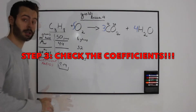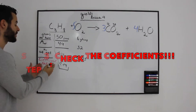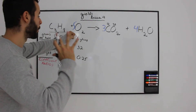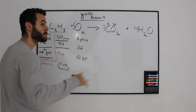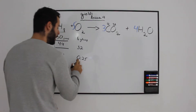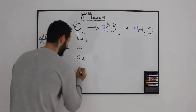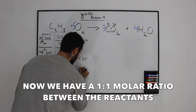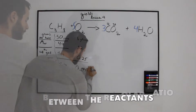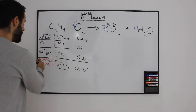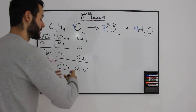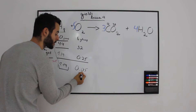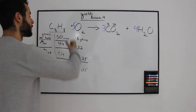But wait — you have to actually compare the coefficient ratios, because 1 mole of propane is actually reacting with 5 moles of oxygen. Which means we have to divide 0.25 by 5, and we will have an actual ratio of 0.05. Only after we see the coefficient ratios can we identify our limiting reactant, which is the 0.05 moles of oxygen.